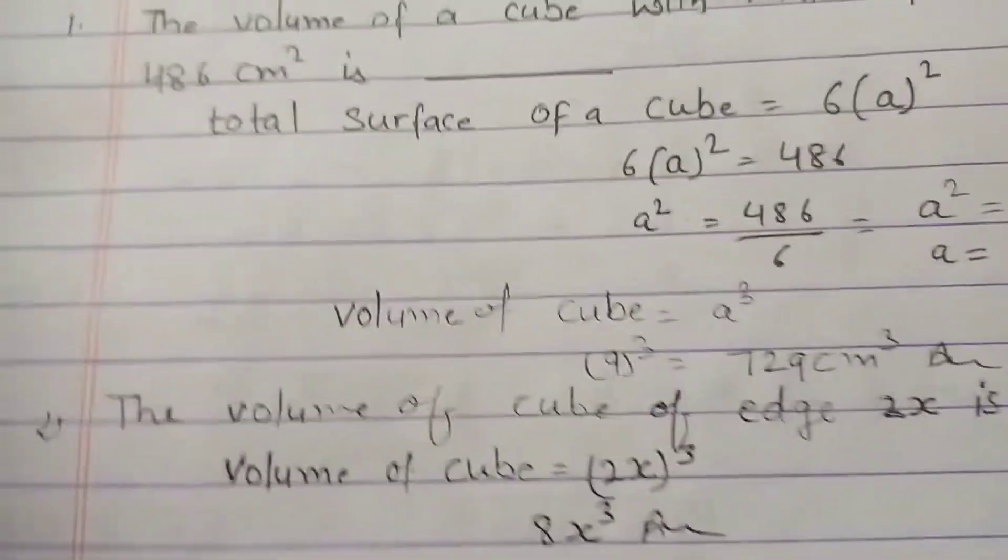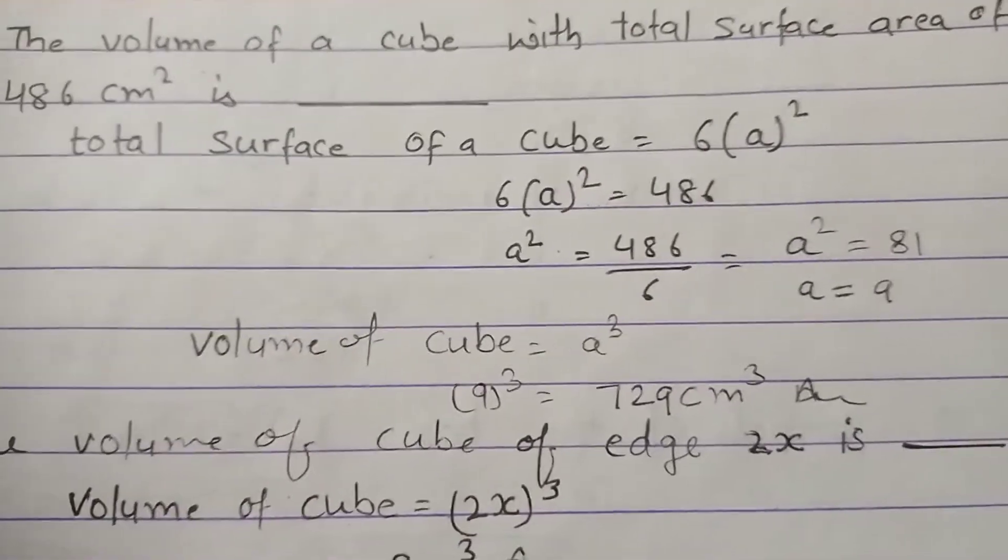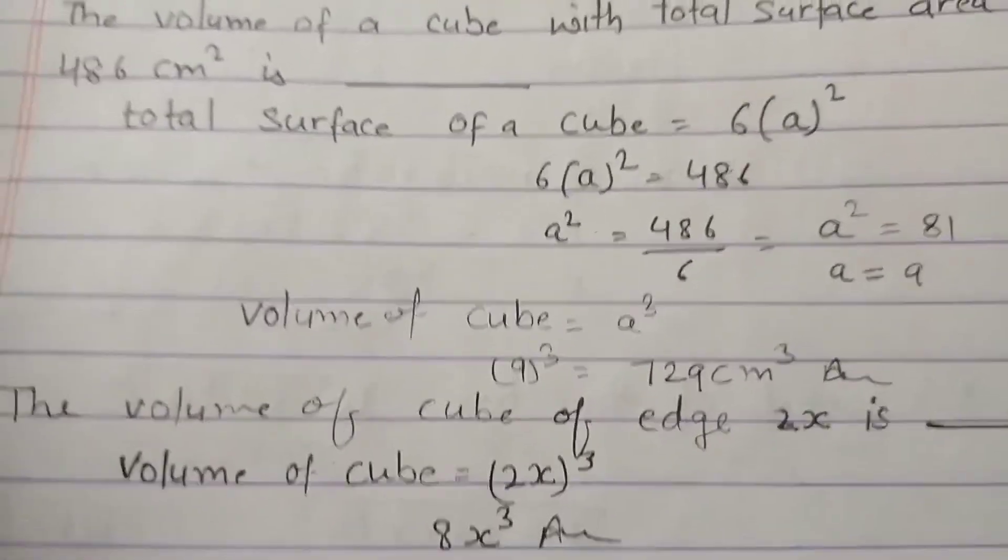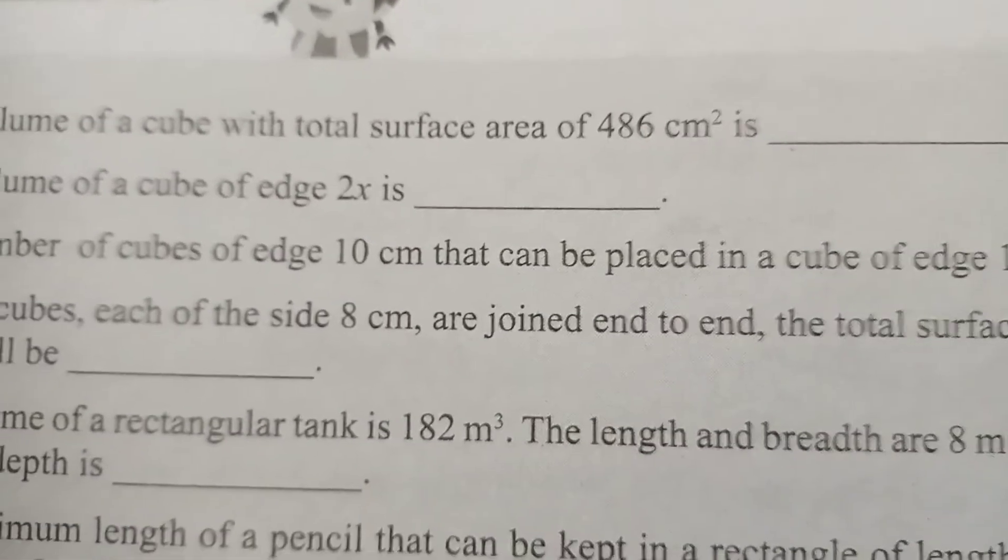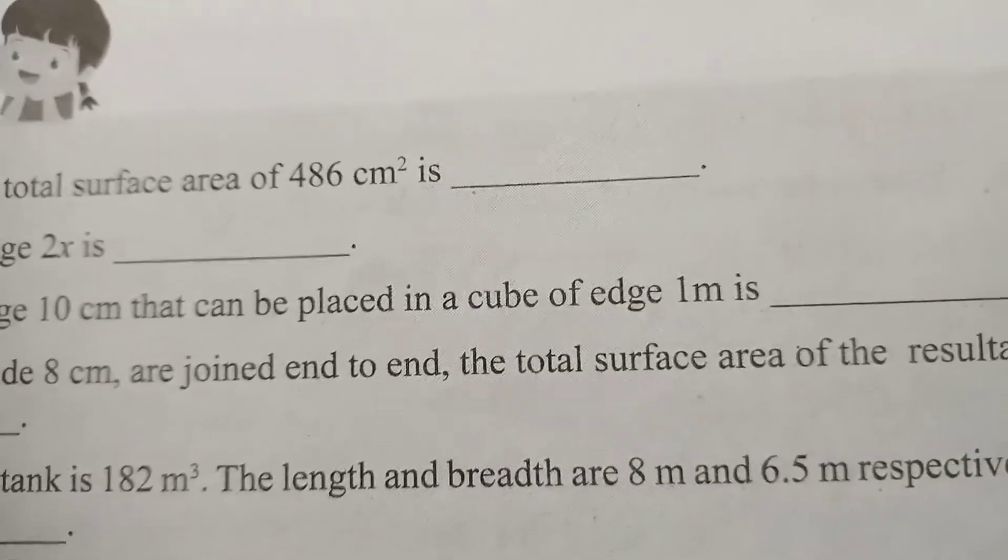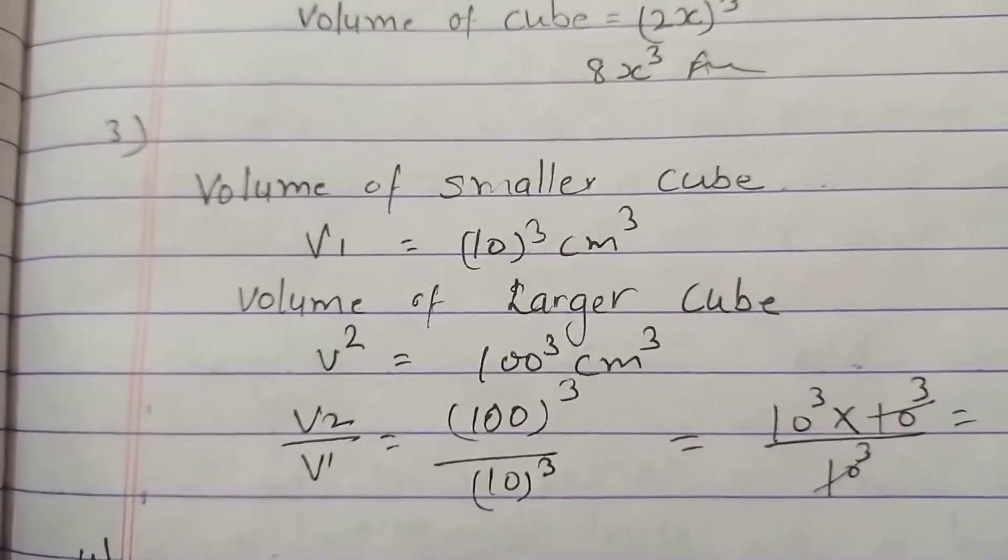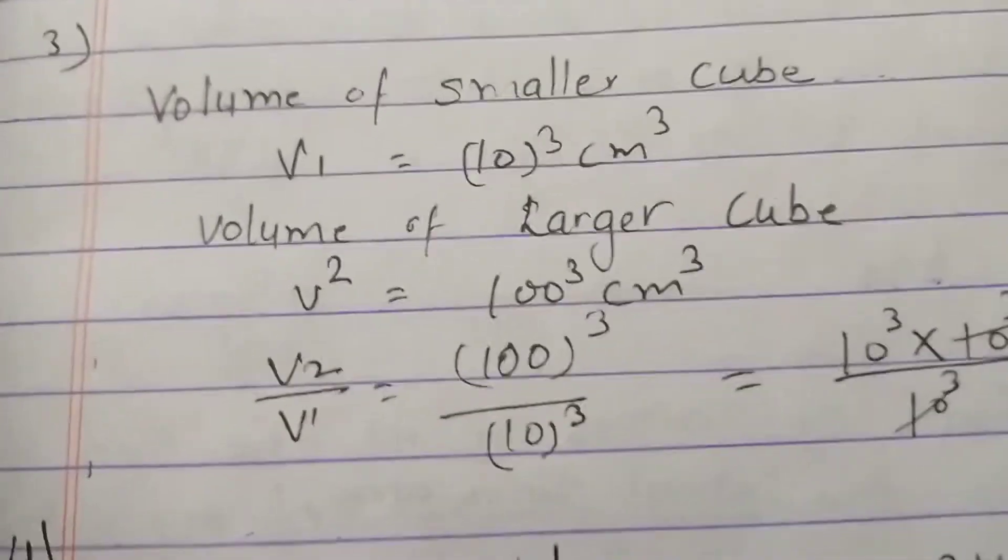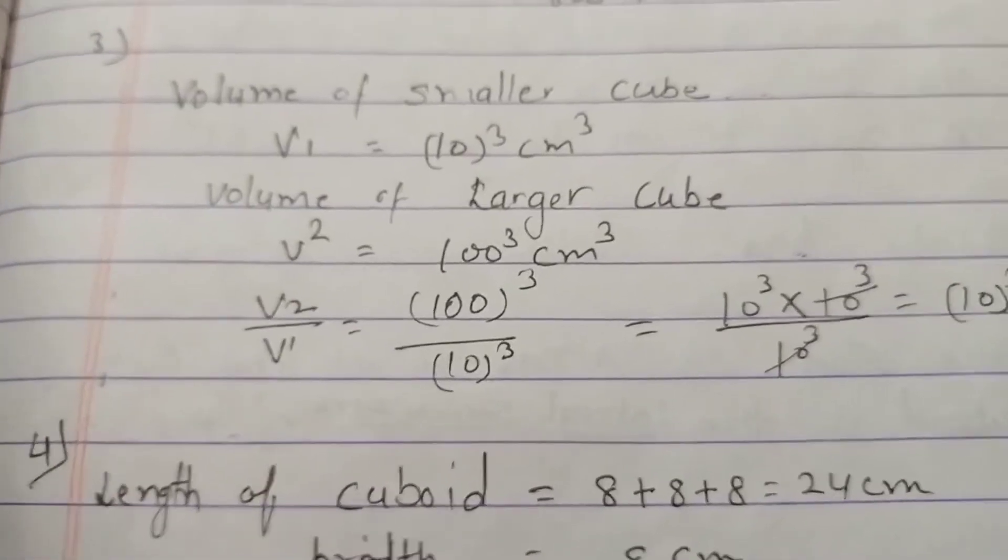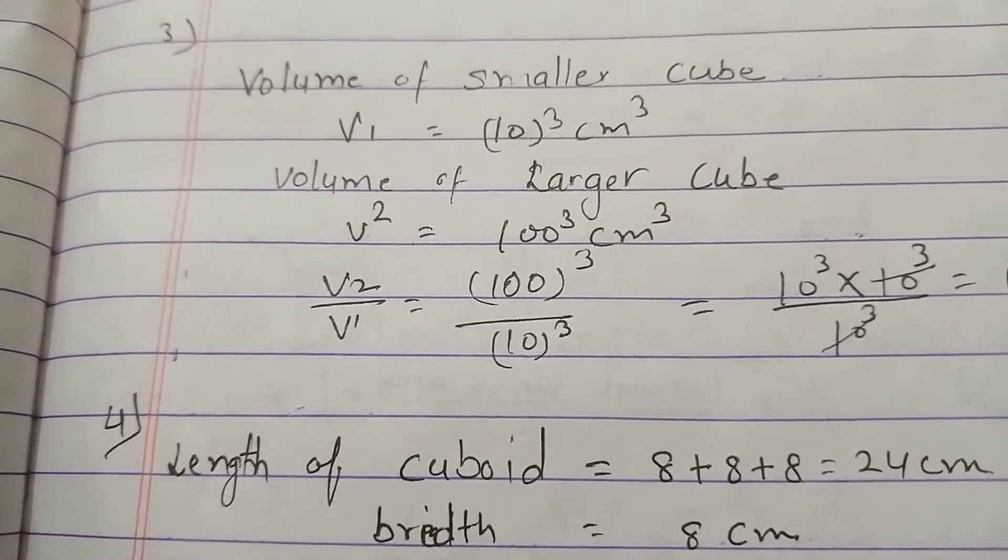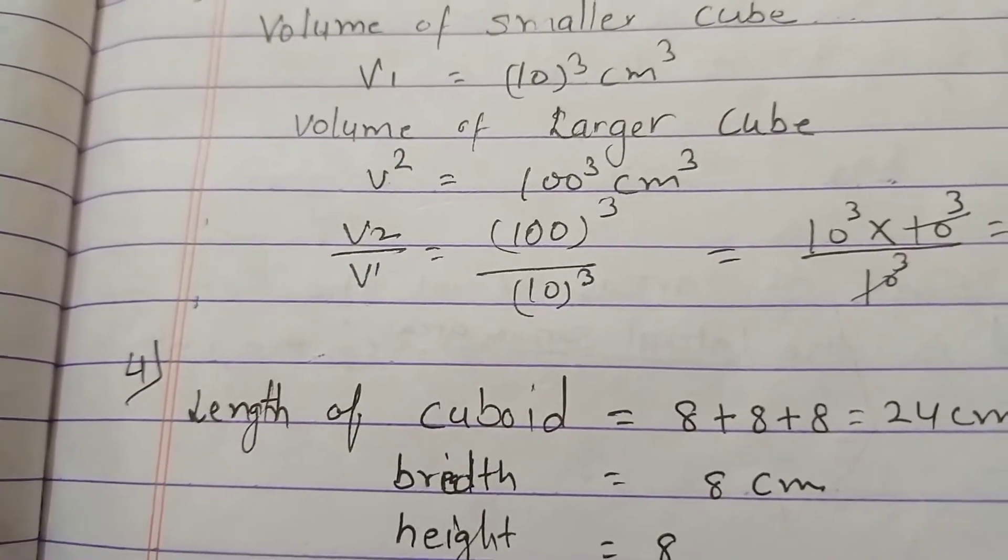The volume of a cube of edge 2x is? So the volume of cube is (2x)³ = 8x³.